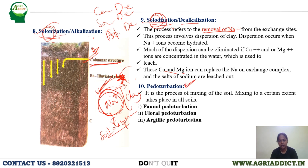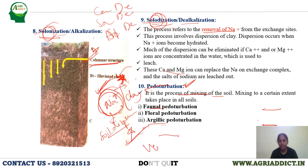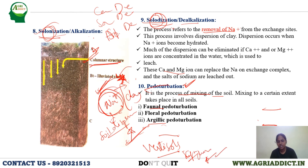The last process is pedoturbation — the process of mixing of soil. It is of different types: faunal, floral, and argillic pedoturbation. In faunal pedoturbation, soil gets mixed with the aid of animals; in floral, by plants. Argillic pedoturbation is very important and is a characteristic feature of Vertisols. In Vertisols, due to the swelling and shrinking nature of the soil during drying and wetting, self-churning of soils occurs — referred to as argillic pedoturbation, involving smectite clay.